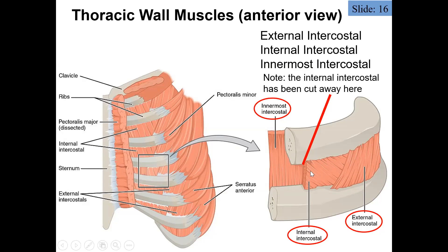The deepest layer are the innermost intercostals, whose fibers run essentially vertically — up and down. These are found more anteriorly and medially and are the deepest muscles. All three groups are involved in respiration, though not as intimately as the diaphragm — they are accessory muscles of breathing that help move the thoracic cage, primarily for forced inspiration and forced expiration.